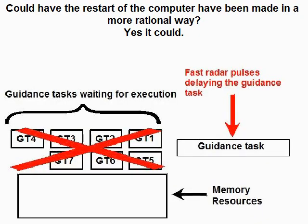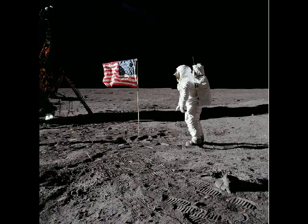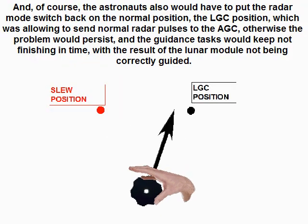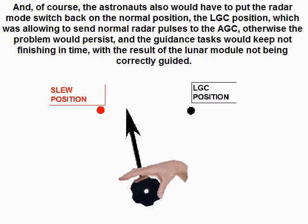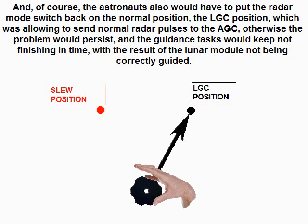Could the computer restart have been made more rationally? Yes. The most obvious solution would have been to simply drop all waiting guidance tasks — which anyway will never be executed because they are too late — so that the memory resources they hold can return to the pool of available resources. Execution of the guidance task would simply resume from the current instruction with the current data, which poses no problem since the address of the currently running instruction is constantly stored in the program counter. No waste of time or memory — clean and efficient. Of course, the astronauts would also have to put the radar mode switch back to the normal LGC position, which allows normal radar pulses to be sent to the AGC; otherwise the problem would persist and the guidance tasks would keep not finishing in time, with the result of the lunar module not being correctly guided.